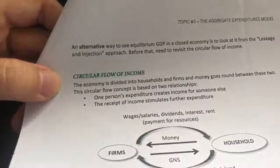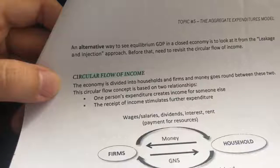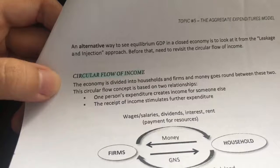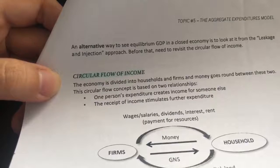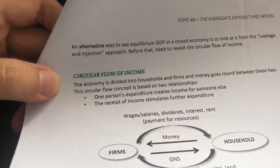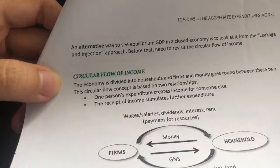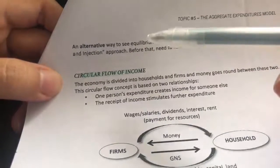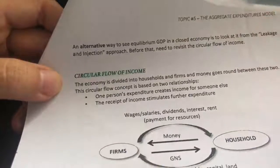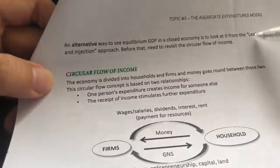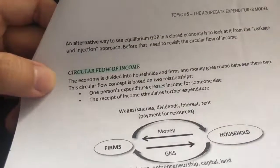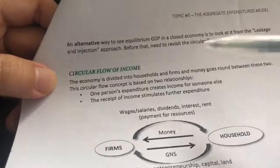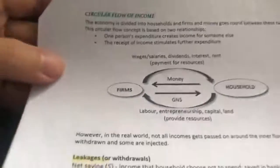Hi everyone, Assalamualaikum. Welcome back to another virtual lecture. In today's video, we're going to continue from where we left off. In the last video, you learned about the first approach to determine the real GDP equilibrium. Today, we're going to look at the alternative way — the second approach — which is called the leakage and injection approach. But before that, we need to revisit the circular flow of income.